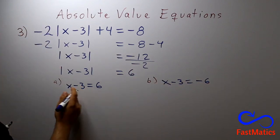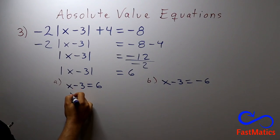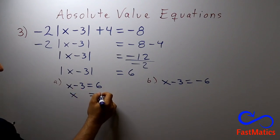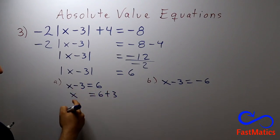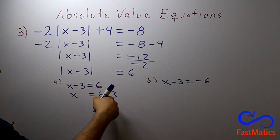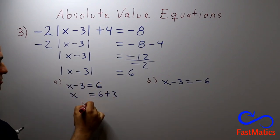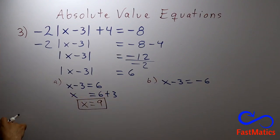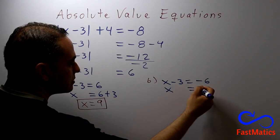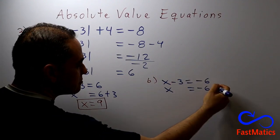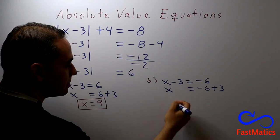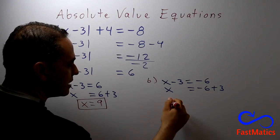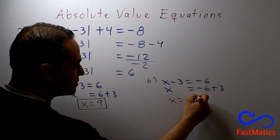And then you write, you solve it very easy. x is equal to 6 plus 3, because the negative 3 will pass as plus 3. And the final answer is x is equal to 9. Here the same: x is equal to negative 6, and this minus 3 will pass as plus 3. Then x is equal to negative 3.